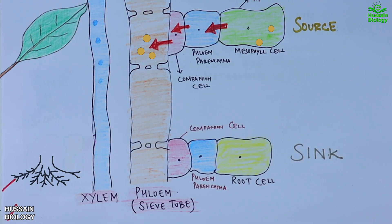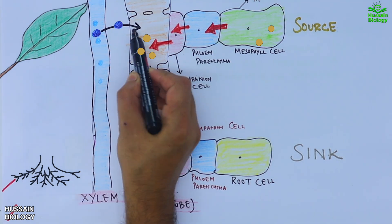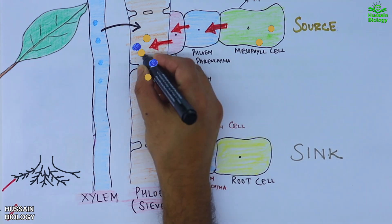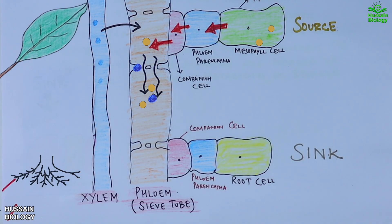This phloem loading with sugars lowers the water potential in sieve tubes. Water then moves from the xylem into the sieve tubes by osmosis due to the high solute concentration. This increases turgor pressure inside the sieve tubes, and eventually this pressure pushes the sugar solution through the sieve tubes towards regions of lower pressure — meaning movement occurs from source, that is from leaves, towards the roots.